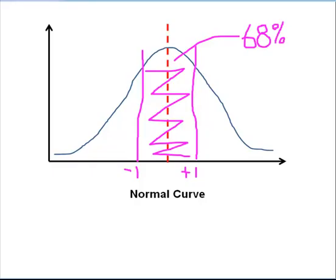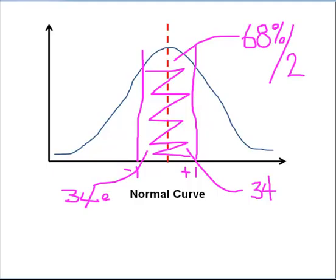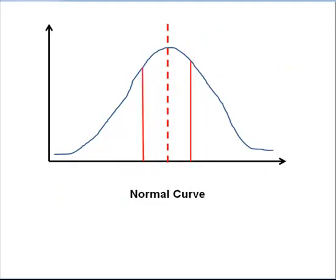Well, if I have 68% of my data plus or minus one standard deviation from the mean and the curve is symmetrical, then that 68% is divided by 2, which gives us 34% here, 34% here. Remember, we're talking about something that is a mirror image of itself. So there's our plus or minus one standard deviation from the mean.